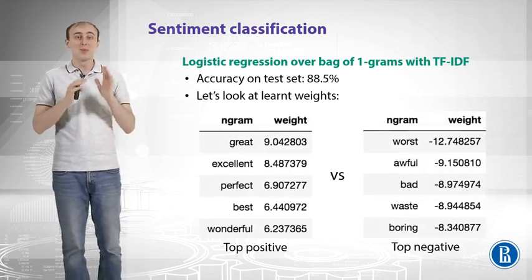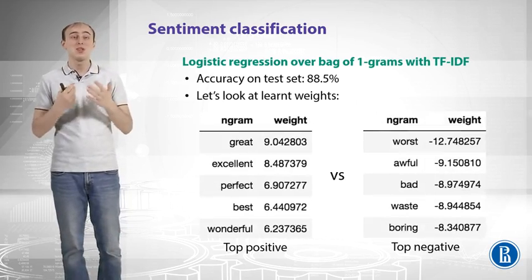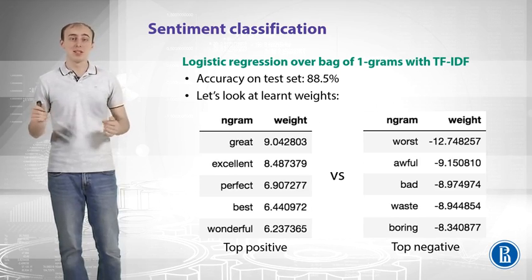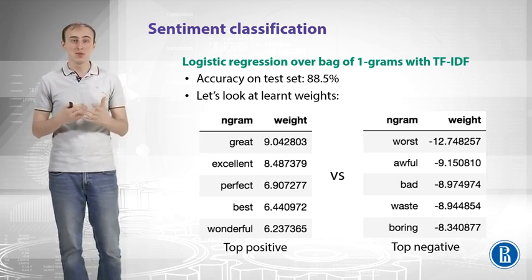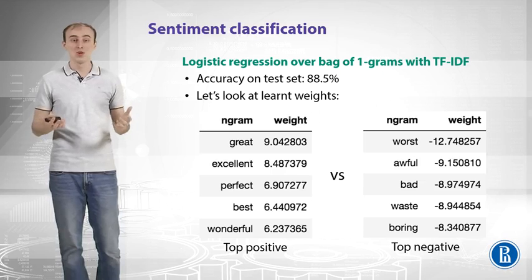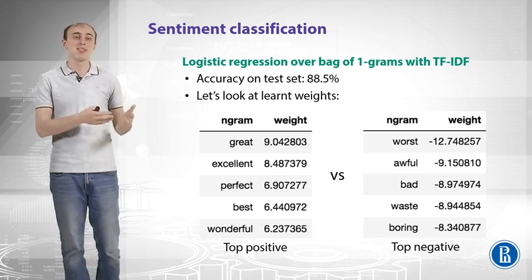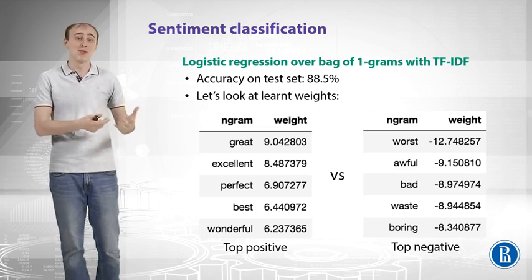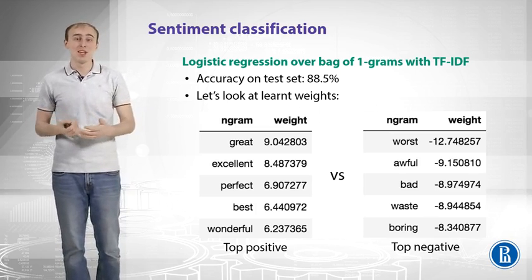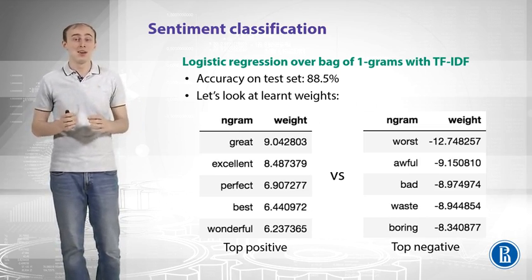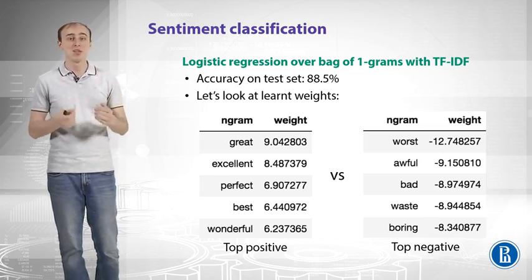Let's train logistic regression over bag of 1-grams with TF-IDF values. Accuracy on the test set is 88.5%, which is a huge jump from a random classifier at 50%. Looking at the learned features: the top positive weights include words like 'great', 'excellent', 'perfect', 'best', and 'wonderful'. The model captured the sentiment of those words knowing nothing about the English language — only the examples we provided. The top negative weights include words like 'worst', 'awful', 'bad', 'waste', and 'boring'. The model learned this from examples. That is pretty cool.